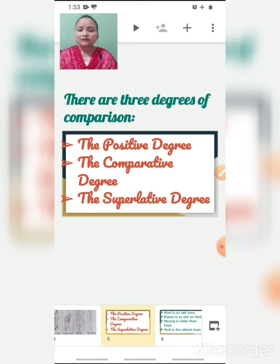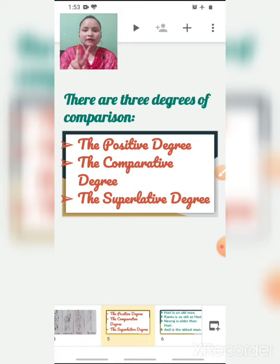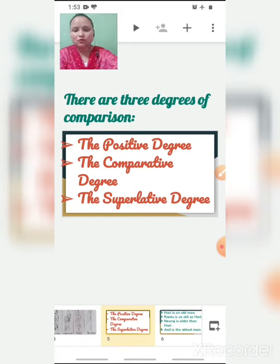I have told you that for comparison we should know how these two things are similar with each other, how different from each other, and to what degree. So for comparison children there are three degrees of comparison. To compare objects or nouns we use three degrees: positive degree, comparative degree, and superlative degree.